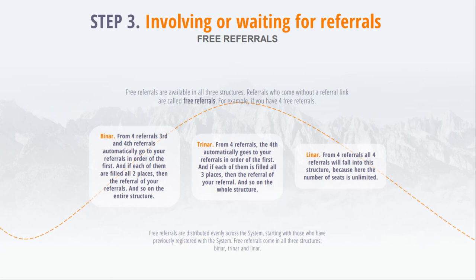In Triner, out of four referrals, the fourth one automatically goes to your referrals in order from the first one. If each of them has all three places filled, they go to the referral of your referral, and so throughout the structure. In Lina, all four referrals will fall into this structure because the number of places is unlimited. Free referrals are distributed evenly throughout the system, starting with those uplines who previously registered. Free referrals come in all three structures: Biner, Triner, and Lina.